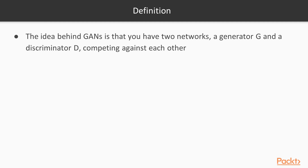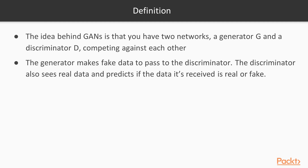The idea behind generative adversarial networks is that you have not one but two networks: a generator and a discriminator. Those two networks are going to compete against each other. The generator is going to produce candidate images — let's call it fake data — and pass it to the discriminator. The purpose of the discriminator is to classify between real data and fake data.